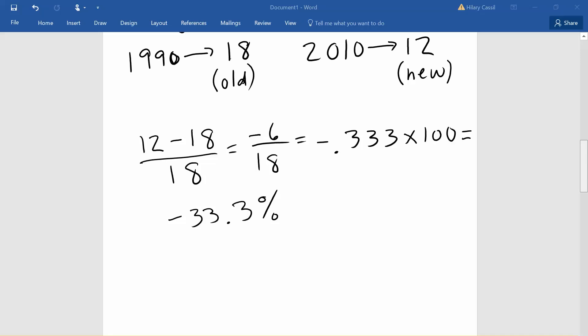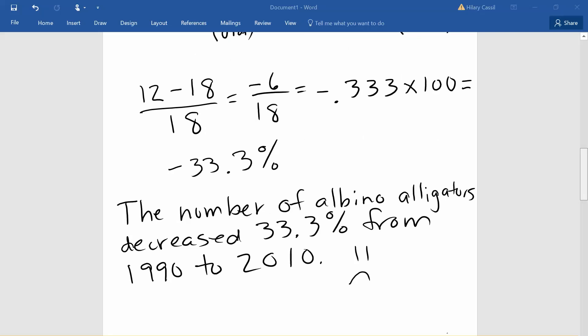We cannot have a negative percentage, what this actually means is that we had a decrease over that time. So a good interpretation would say that the number of albino alligators decreased by about 33.3 percent from 1990 to 2010.